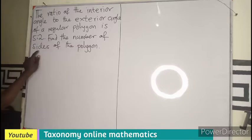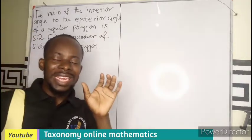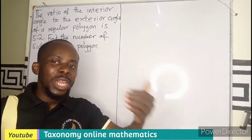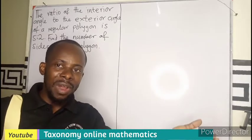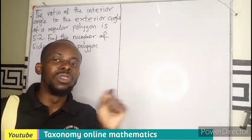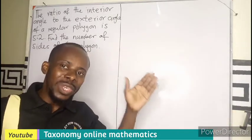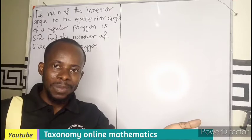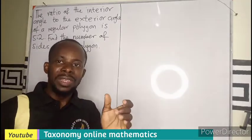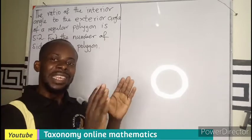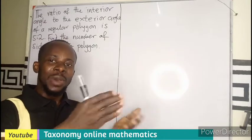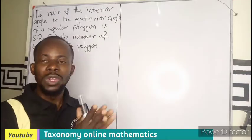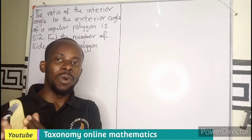We have to find the number of sides of the polygon. We are dealing with interior angle and exterior angle, but the size of each is not given to us — only the ratio in which they have been shared. We know that an interior angle plus its corresponding exterior angle gives a sum of 180°. So the proportion of the angles that add up to 180° is 5 is to 2, meaning 180° is divided into 7 total parts: 5 parts go to the interior whilst 2 parts go to the exterior.